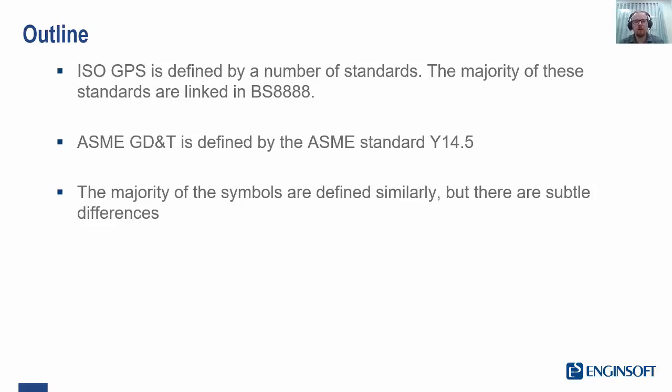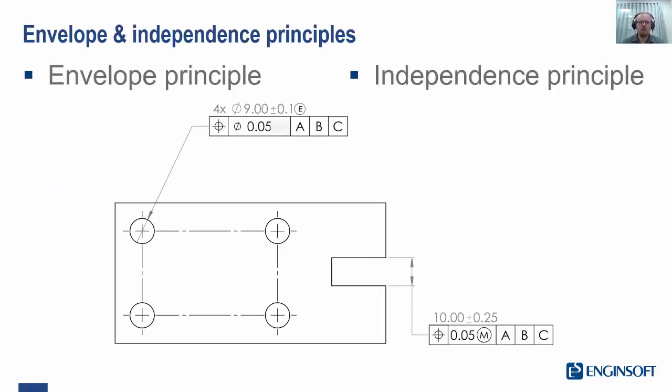ASME GD&T is defined by the ASME standard Y14.5 as a single document. The majority of the symbols are defined similarly but there are many subtle differences so it's important to be careful and conscious of which standard you are using. I'm going to outline some of those key differences today.